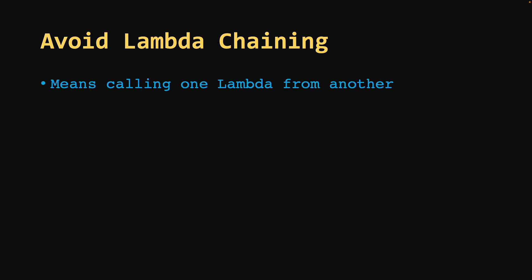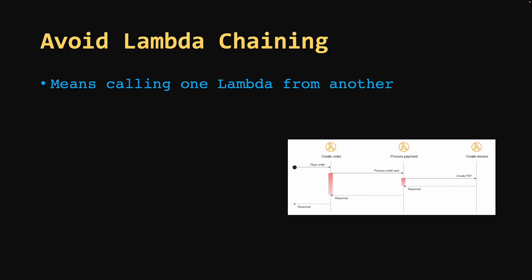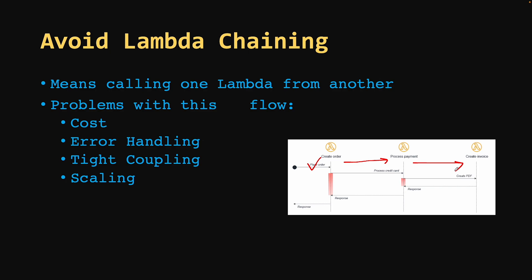Avoid Lambda chaining. Lambda chaining happens when you call one Lambda function from another. This is a very famous anti-pattern listed in AWS official documentation. For example, a place order function calls process payment, which in turn calls create invoice. The first problem is cost: with Lambda you pay for the duration of invocation, and while create invoice is running, the other two Lambdas — place order and process payment — are waiting idle for the response. These two Lambdas are unnecessarily running while create invoice is processing.